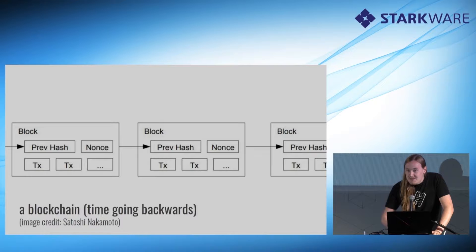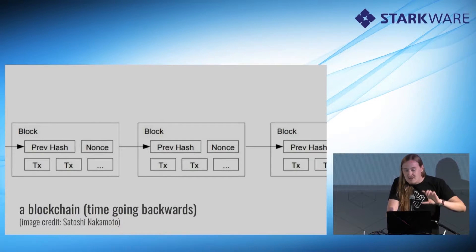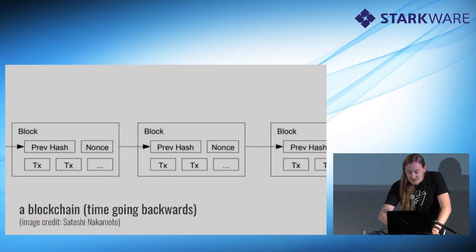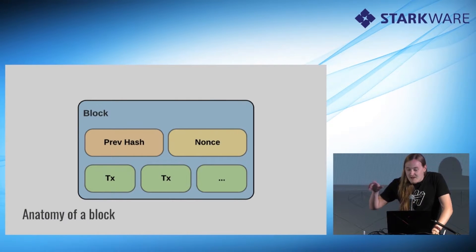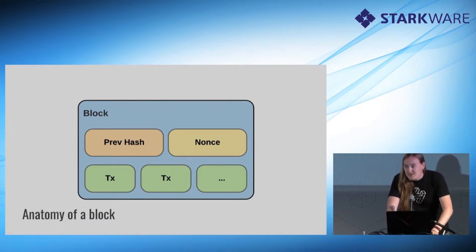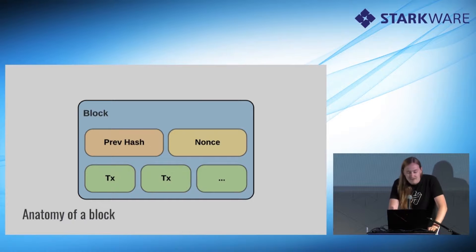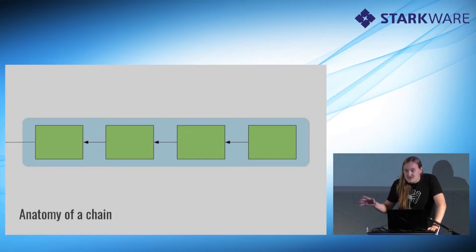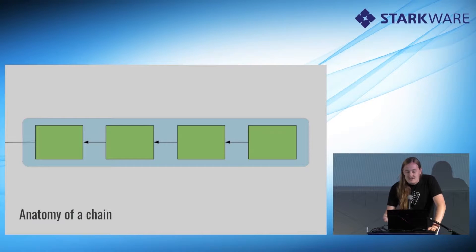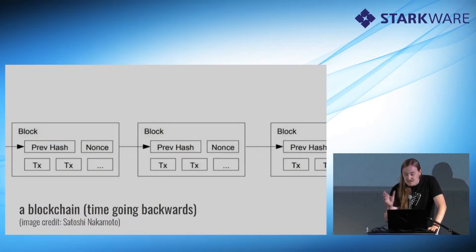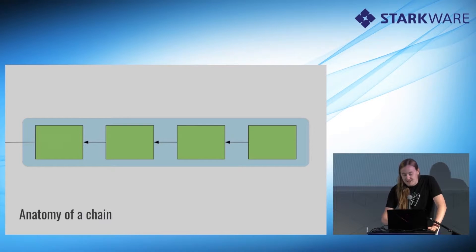This is what Satoshi Nakamoto thought a blockchain looked like — he got it wrong. All of those arrows should be pointing the other direction. Typically, we represent a block with a prevhash and a nonce, and it's full of transactions. There's more stuff that goes into a header. Bitcoin headers are about 80 bytes; Ethereum headers are about twice or three times that. A chain is just a collection of blocks where each one references the previous block.